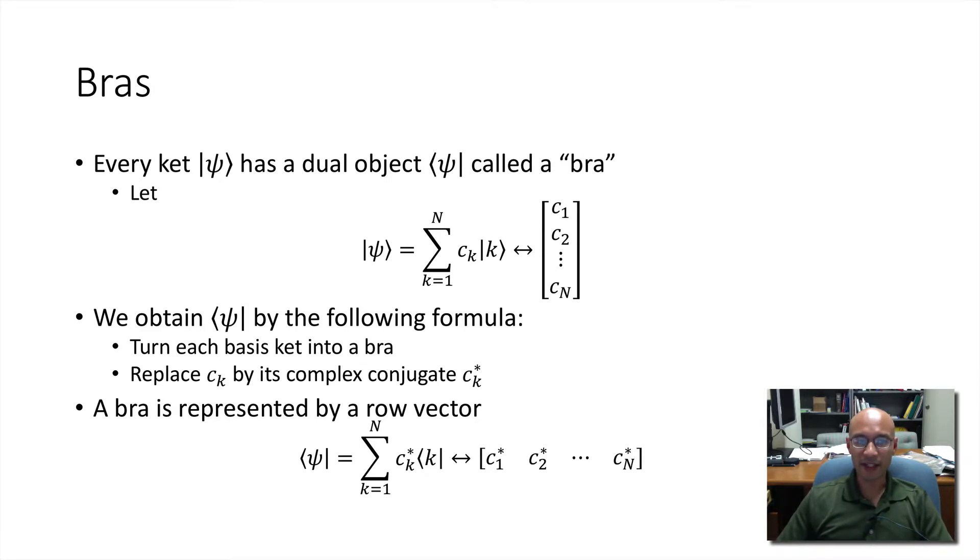So every ket has a dual object called a bra, so called because when you take a bra and a ket and put them together, you get a bra ket or bracket. So if we have this state or ket, which is a quantum superposition, and it has its vector representation, notice a column vector representation, we can obtain bra psi using the following method. We turn each basis ket into a bra, and we replace C sub K by its complex conjugate.